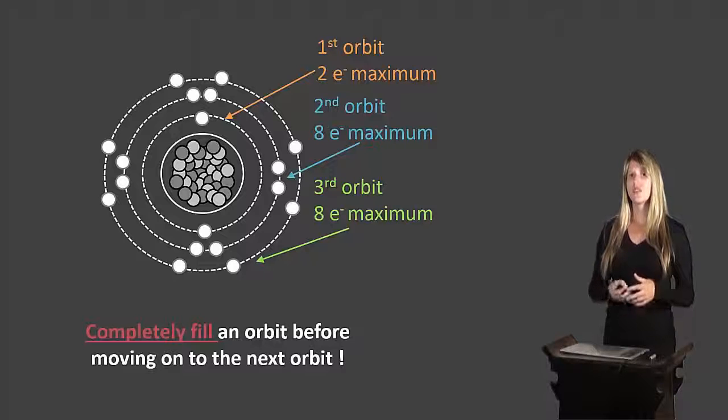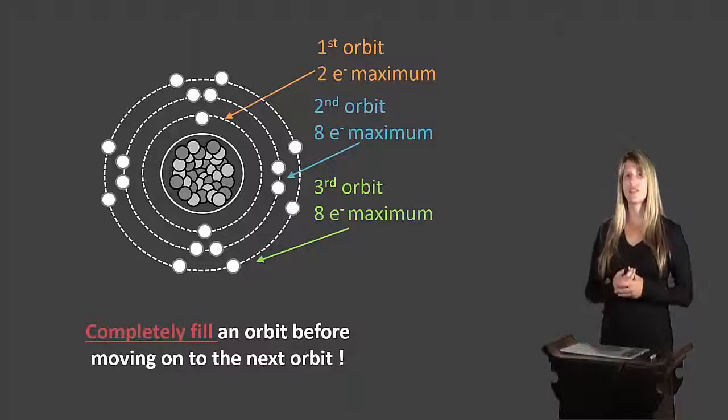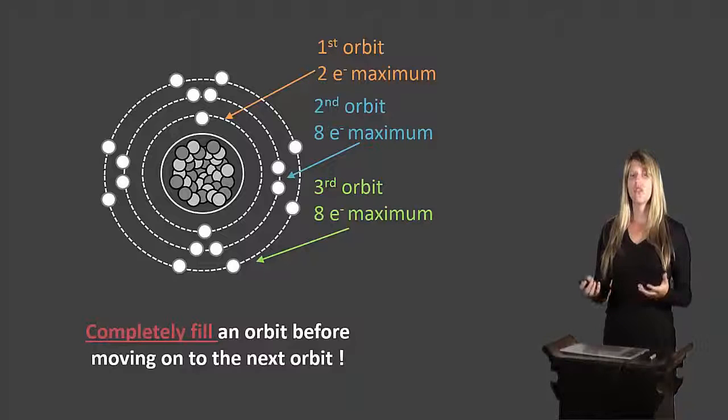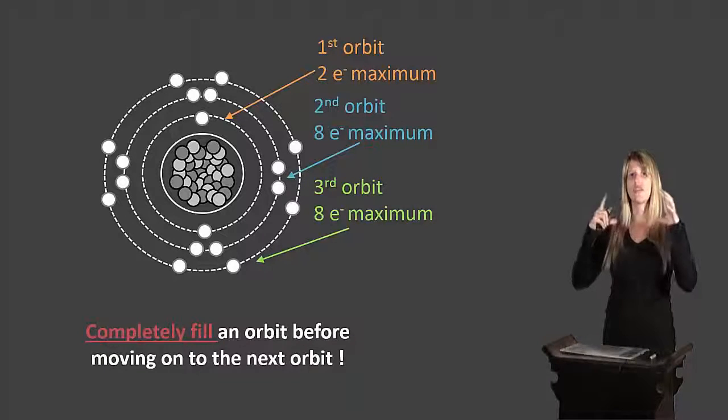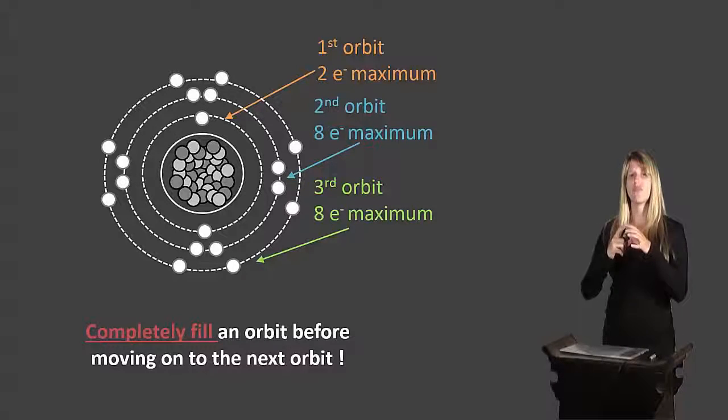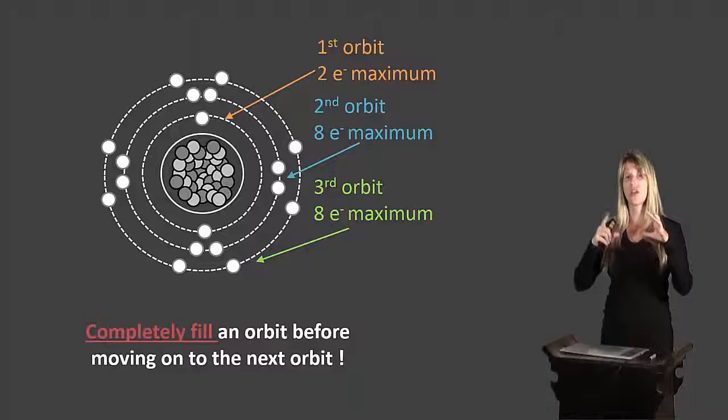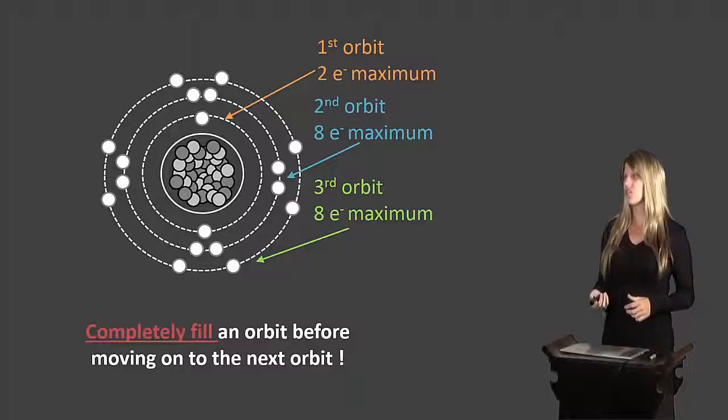Now one of the rules is that you must completely fill a shell before moving on to the next. So if you have two electrons, let's say we're dealing with helium, both need to go in the first shell because the first shell will take two. You can't put one in the first shell and then put the next in the second shell, because that would leave the first shell unfilled. So we completely fill our shells and then move on to the next to put our remaining electrons.